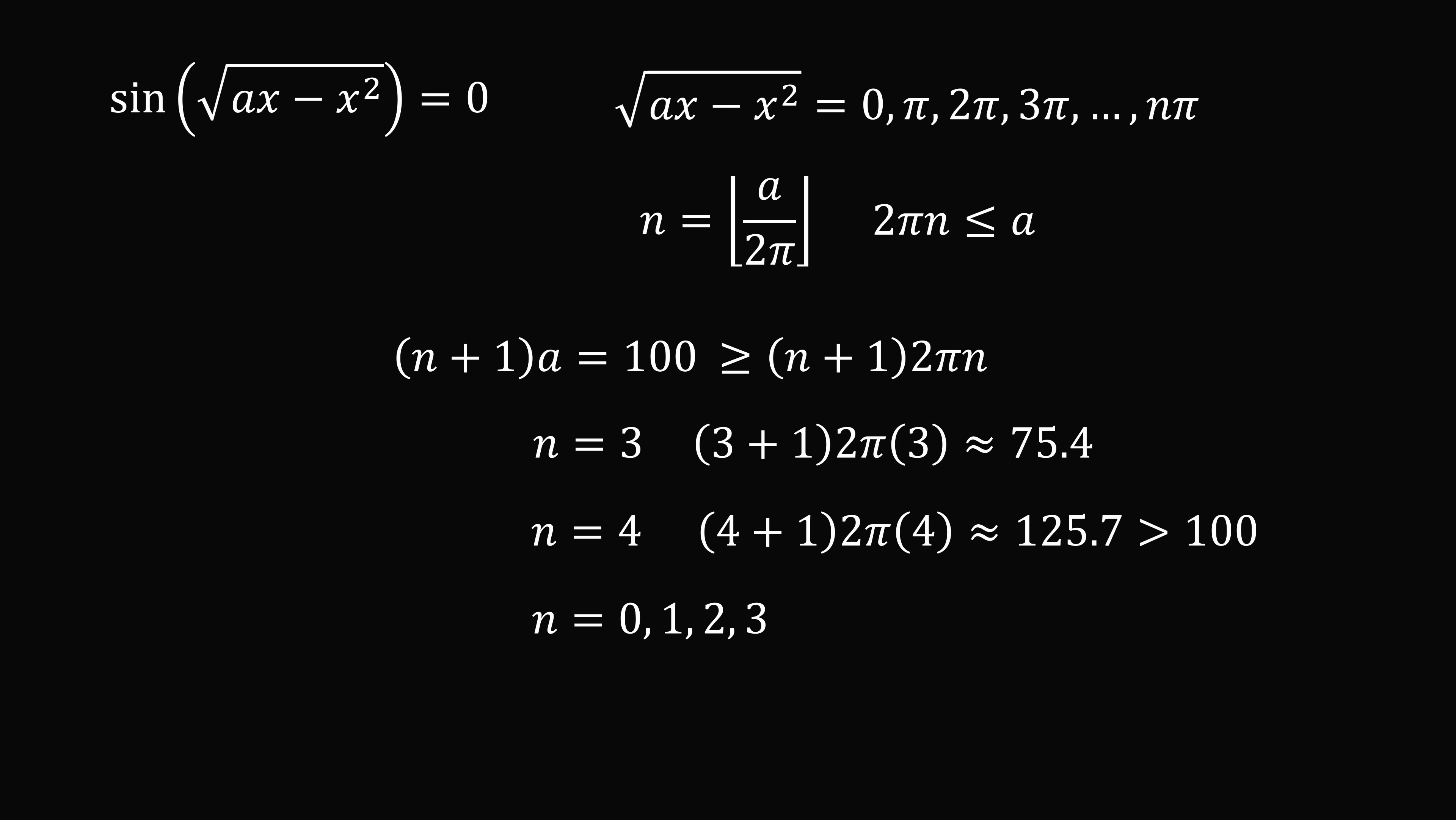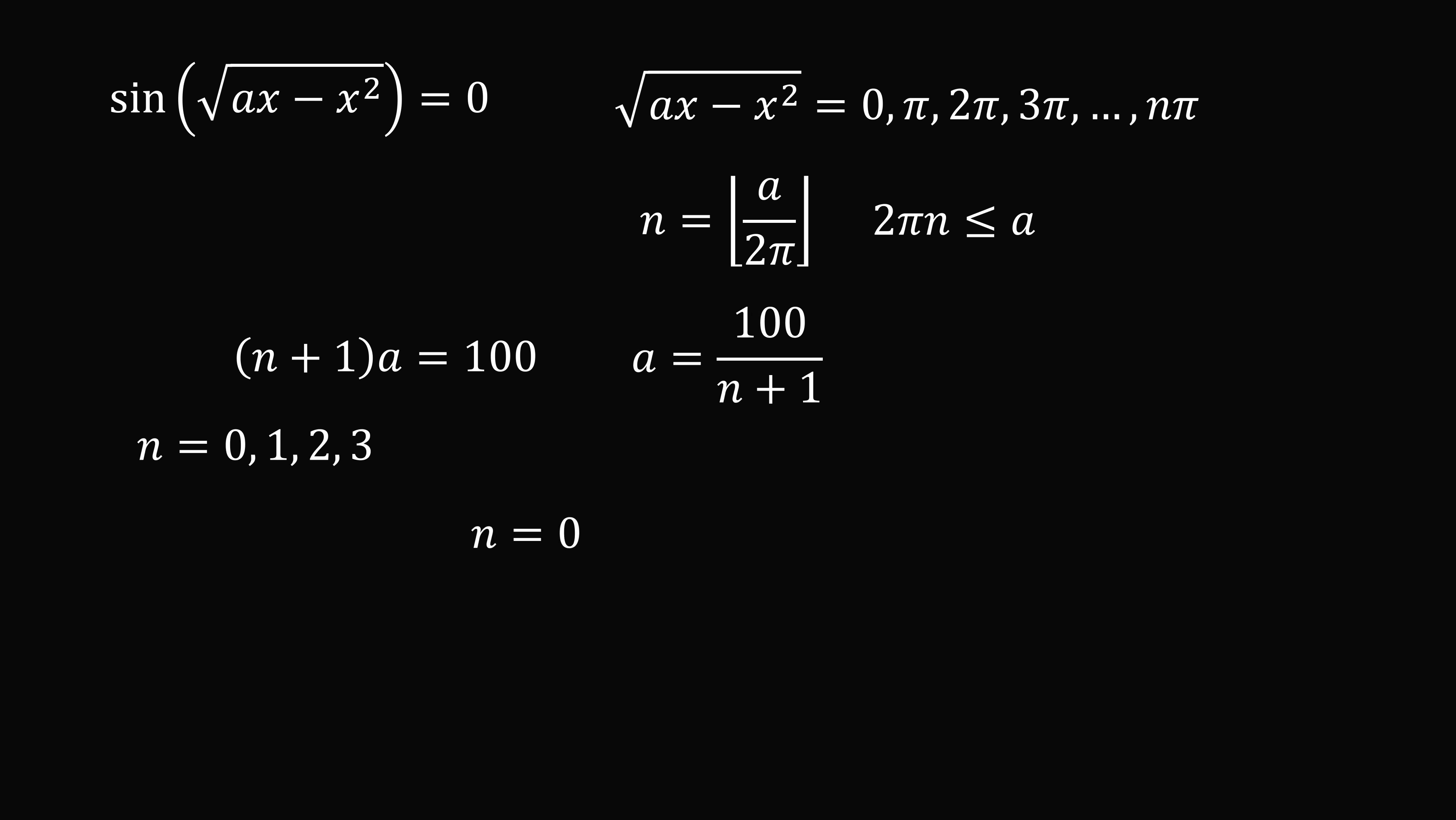So let's go ahead and see which value actually works. From the equation n plus 1 multiplied by a is equal to 100, we can solve that a is equal to 100 divided by n plus 1. So let's start out that n is equal to 0. If we substitute in, we get that a is equal to 100. But then we also need n to be the floor of a divided by 2 pi. But in this case, the floor of 100 divided by 2 pi will be 15. And we already said that n needs to be equal to 0. So this case can't work.